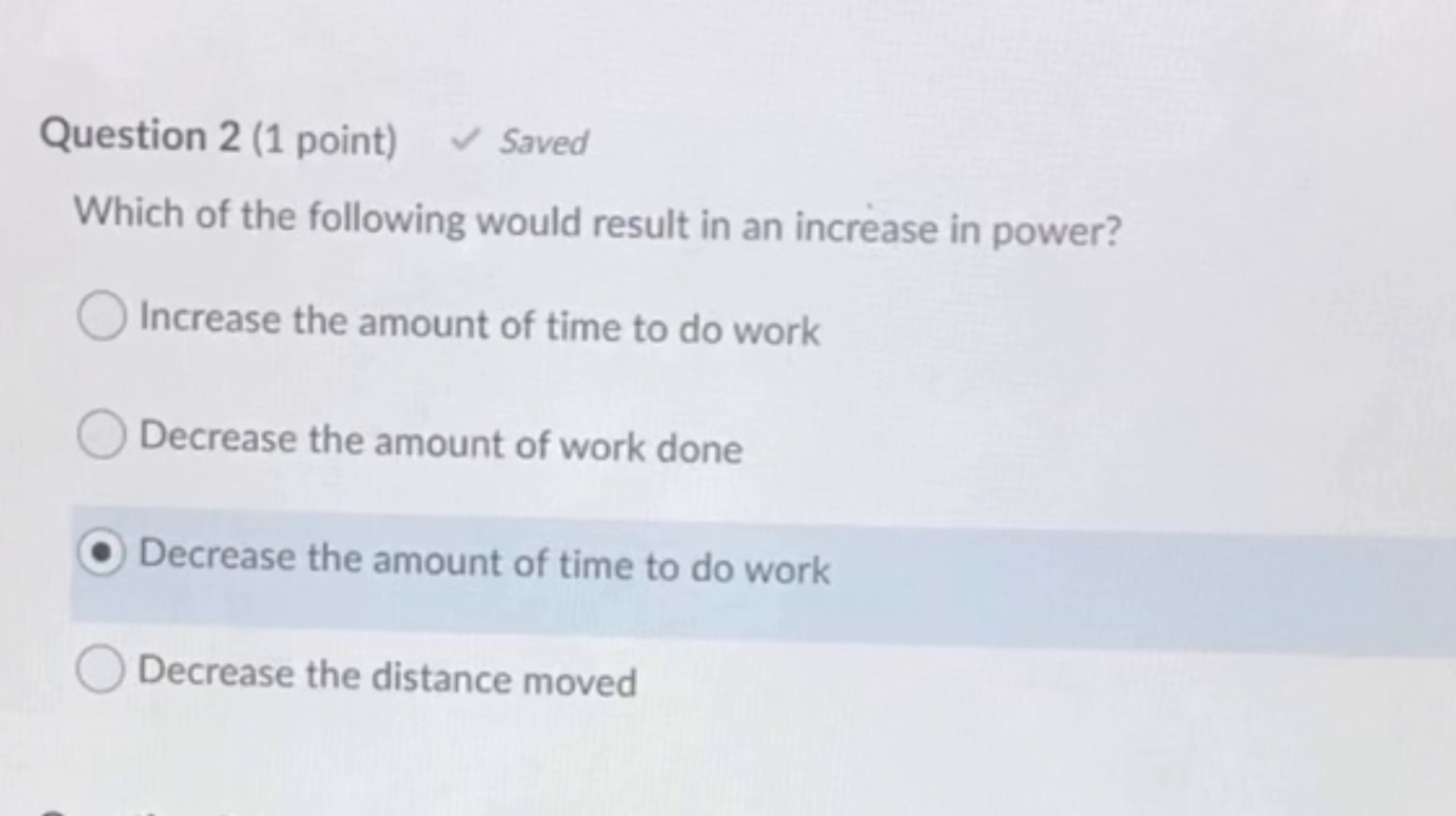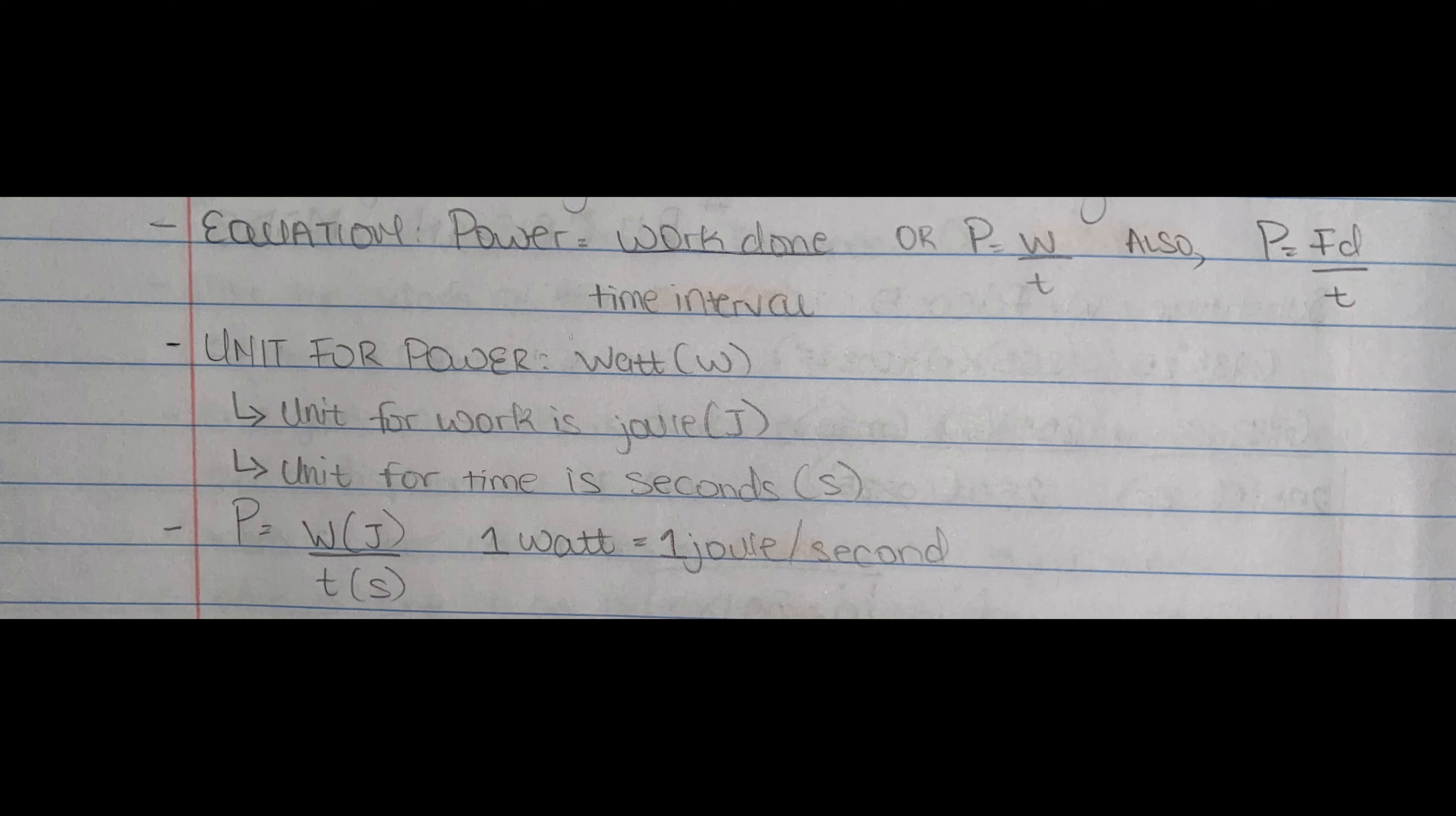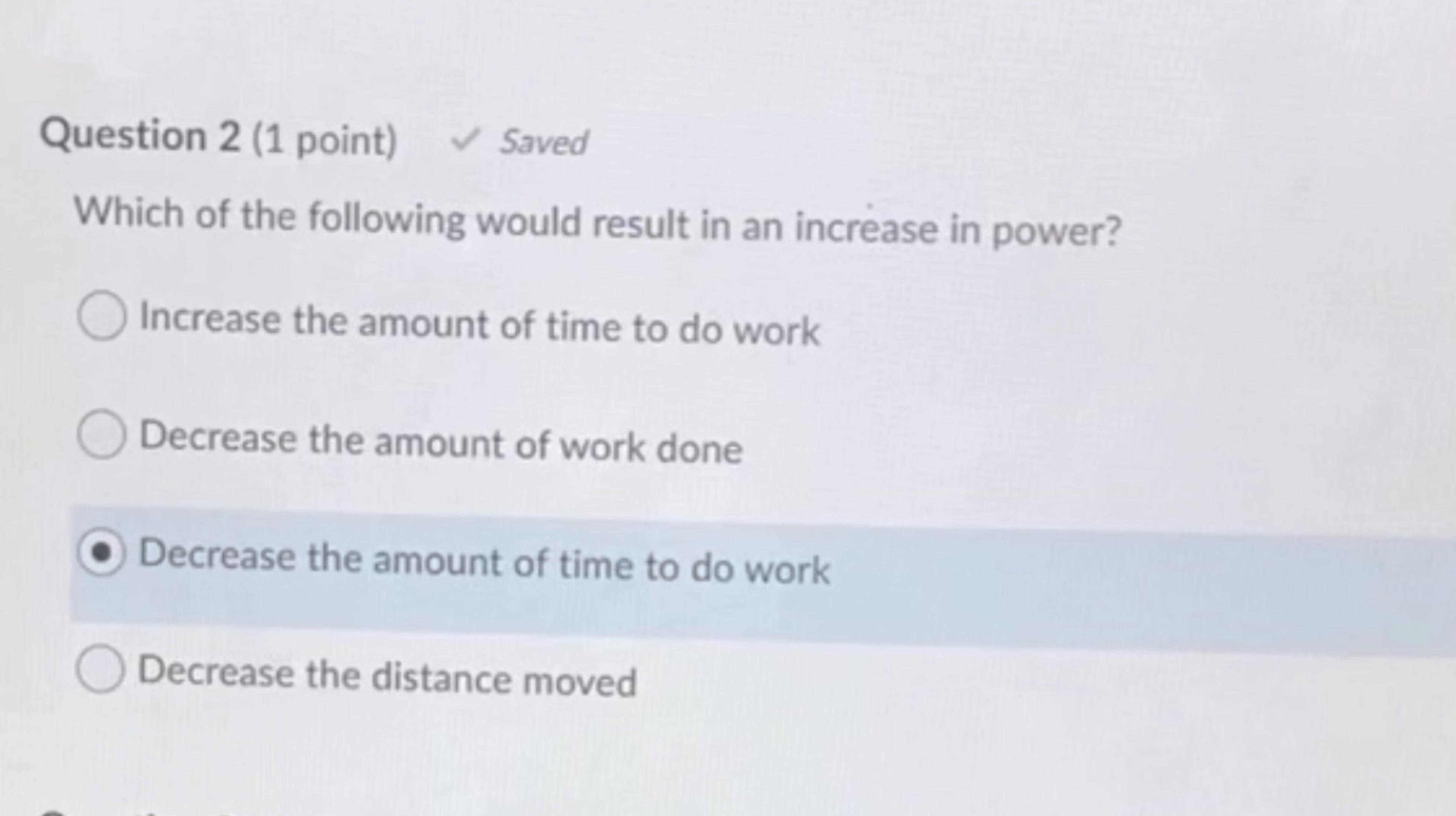Which of the following would result in an increase in power? For this one, what I did was I just plugged in numbers. We know that the formula for power is work over time, and work is also force times distance. So I made up numbers and basically just plugged it in. For the first one, I increased the amount of time, so like force would be 300 and distance is 30 and time is 3. I would just switch around the numbers for each option and see how it affected the power. When I did all that for the four options, my answer was C, and that was to decrease the amount of time to do the work. Decreasing the time would increase the power.